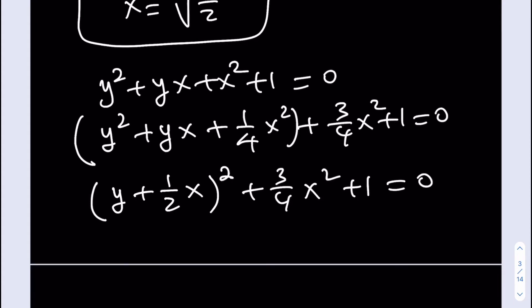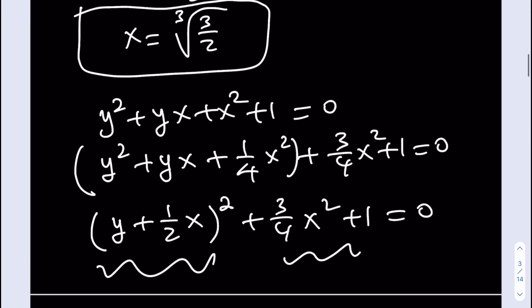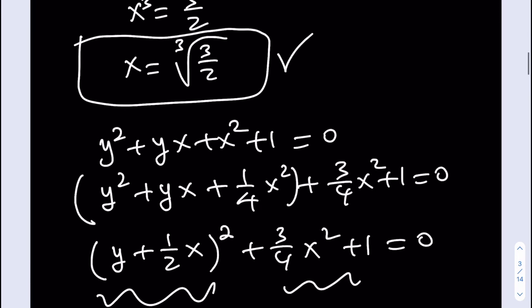What is really interesting about this equation is that even though there are two variables, this equation has no solutions. Why? Because this expression cannot be negative. This expression cannot be negative. The sum of two non-negative quantities will never be 0. That means we do not get any real solutions from here. So the only solution is this one.